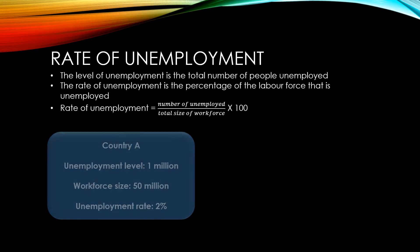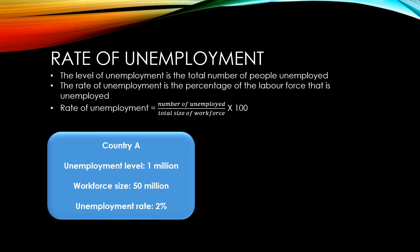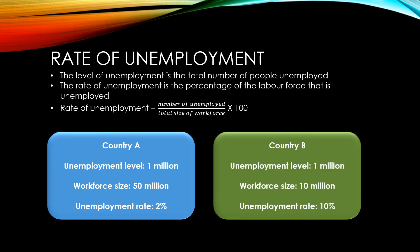A country with an unemployment level of 1 million workers and a workforce size of 50 million workers would have an unemployment rate of 2%. Meanwhile, a country with the same unemployment level of 1 million workers but a workforce size of just 10 million workers would have an unemployment rate of 10%. As you can see from this example, the unemployment rate is a much more effective measure of unemployment than the level of unemployment.